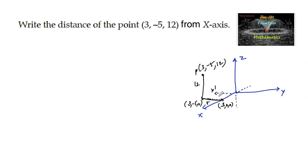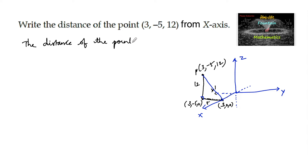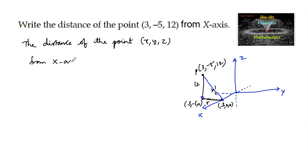Now the distance of this point from the x-axis. From the x-axis, the distance is — very clearly we can say — by using Pythagoras theorem: root of 12 squared plus 5 squared. We can also remember this as: the distance of the point x, y, z from the x-axis is root of y squared plus z squared.